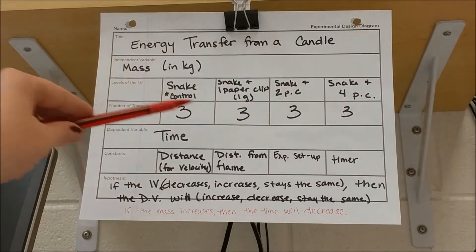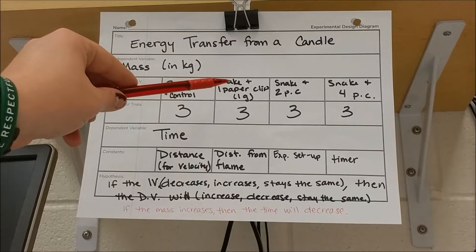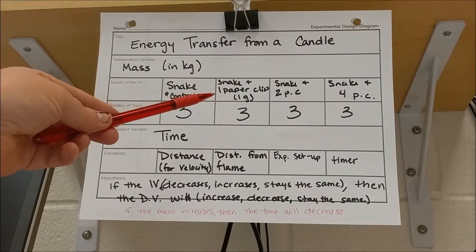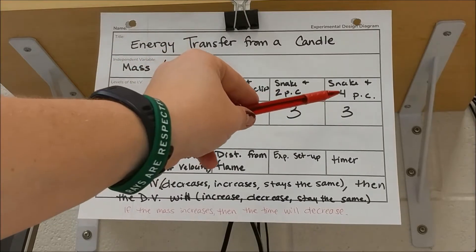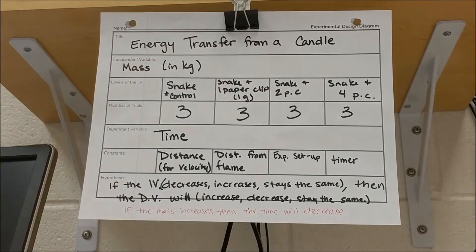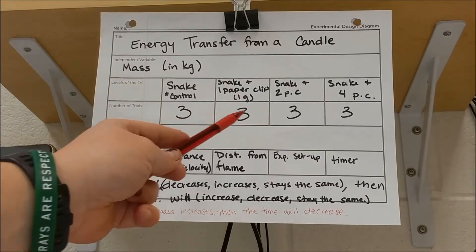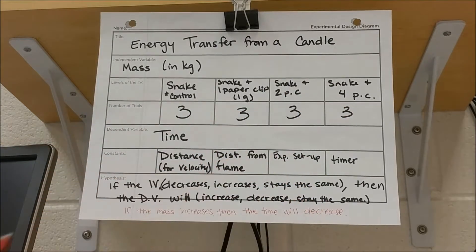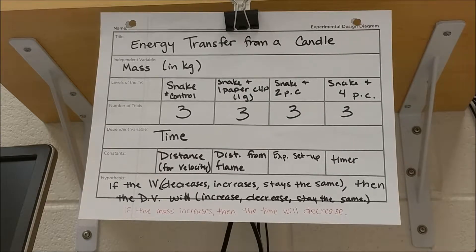For the different mass levels: the first is just the snake itself — the least amount of mass possible. Then I add a paper clip to slightly tweak the mass. Since it's a paper snake, we can't have anything too heavy or it'll break the snake. Then I add a second paper clip, and then a couple more, to see how changing the mass changes the energy. I'm going to do three trials for each to be consistent and to ensure there are no errors in the data.